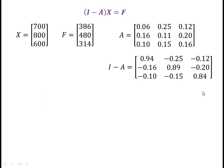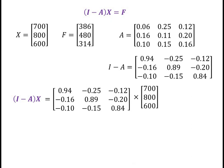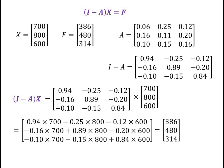Therefore, (I minus A) times x gives, after multiplication, the vector [386, 480, 314], which is nothing but the final demand vector f. Hence, we have proved that (I minus A) times x equals f. So here we have proved the Leontief input-output system with a suitable example. Thank you.